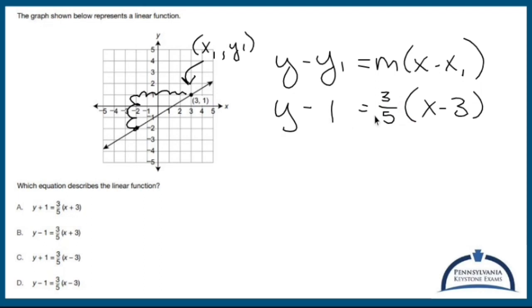I've got y minus 1 equals 3 fifths times the quantity x minus 3, which is D. The answer is D.